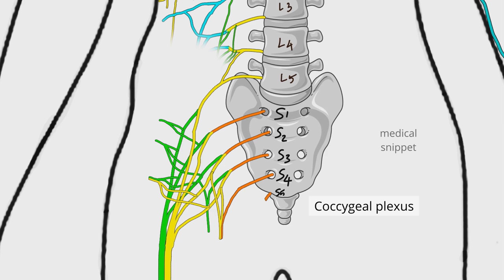The coccygeal plexus is formed by the fifth sacral nerve and the coccygeal nerve. It gives rise to the anococcygeal nerve, which pierces the sacrotuberous ligament to supply the skin of the region of the coccyx, as well as the sacro-coccygeal joint.